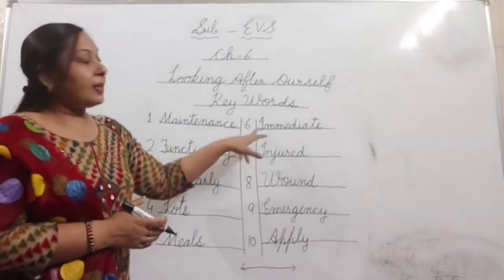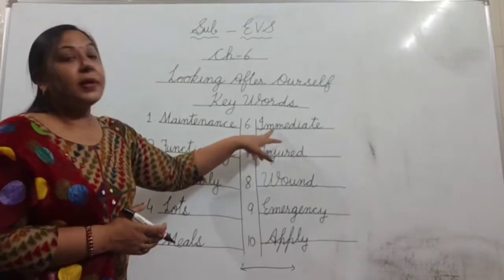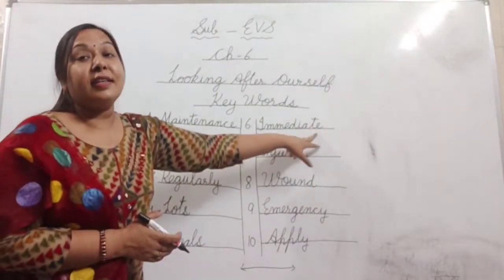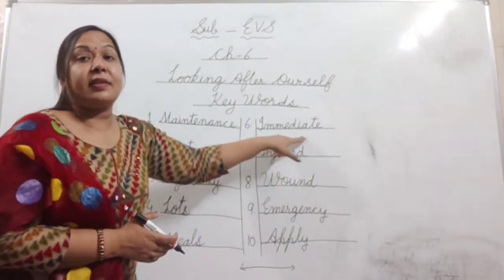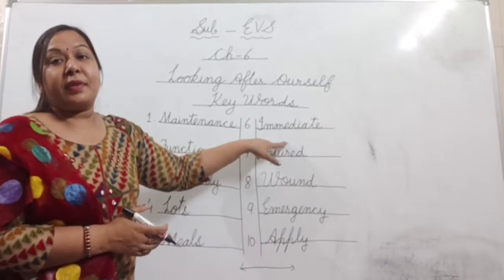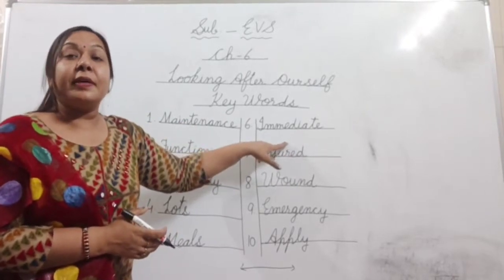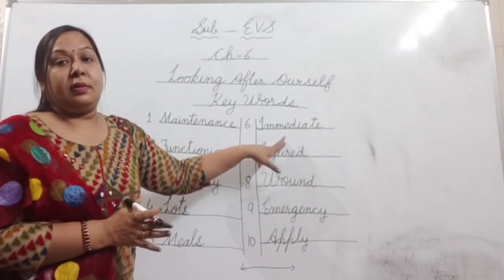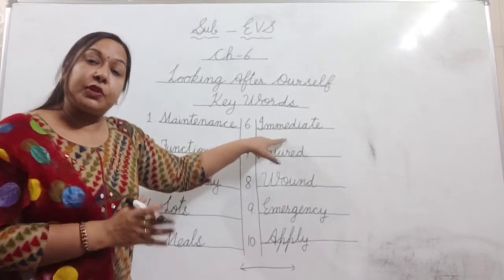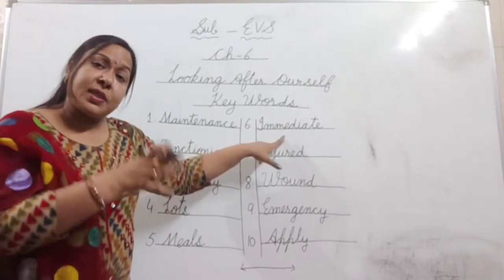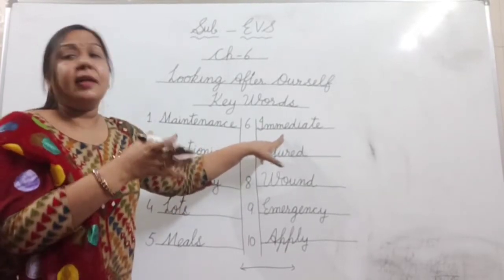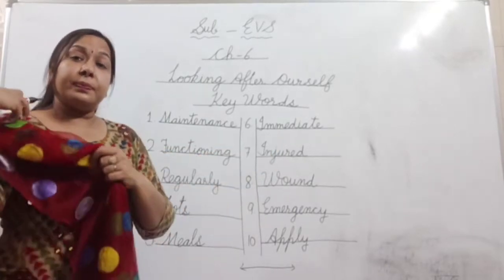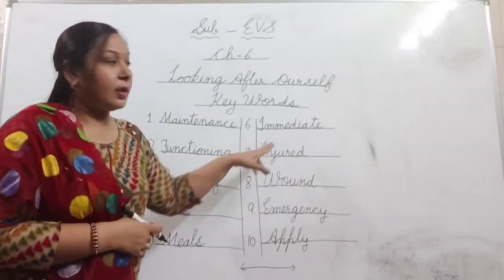Number six: i-m-m-e-d-i-a-t-e — it's immediate. Immediate means instant or quick. Immediate ka matlab hota hai instant — usi time, quick, jaldi se. Aur Hindi mein tural. The Hindi word is tural.